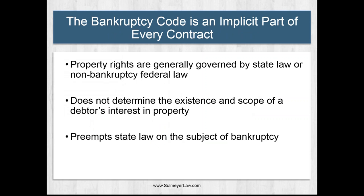The bankruptcy code itself is an implicit part of every contract. Most people outside of bankruptcy law don't perceive things that way, but it is the case. Contract rights are generally governed by state law, or in some instances such as cases involving intellectual property, are governed by non-bankruptcy federal law. The bankruptcy code itself does not determine the existence and scope of a debtor's interest in property — that's generally determined based on rights the debtor holds under state law or non-bankruptcy federal law, in the case of intellectual property rights for example.